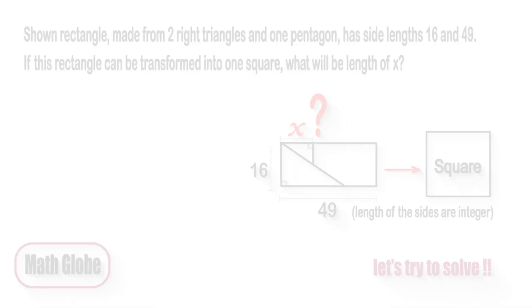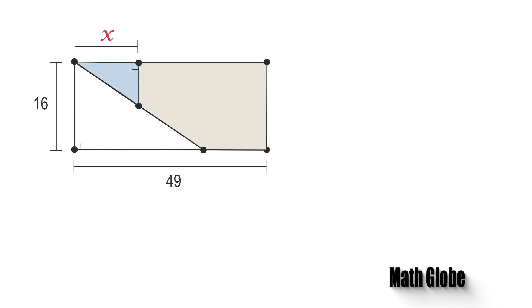Let the solution come. Okay first, let's redraw the shapes here. As seen, the rectangle made from two right triangles and one pentagon.